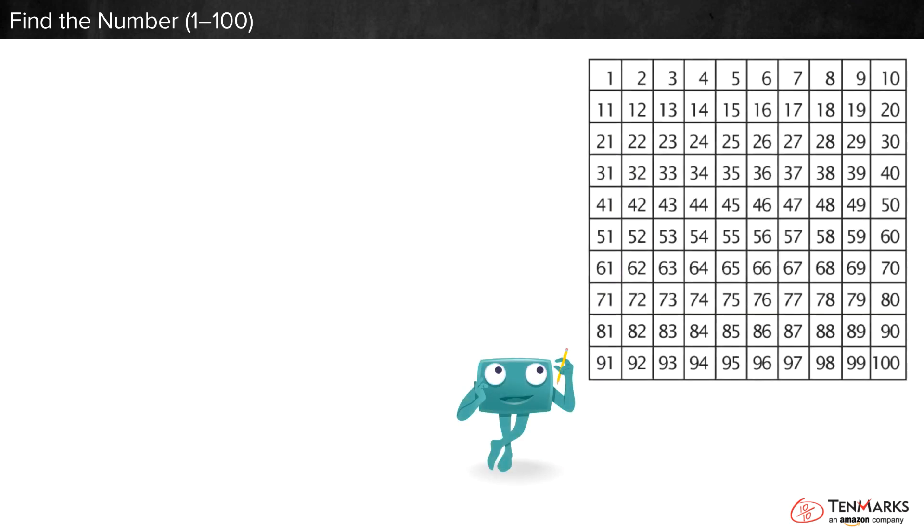This hundreds chart shows the numbers from 1 to 100 in order. If a number is missing, we can use counting to find out what it is. Let's try it.